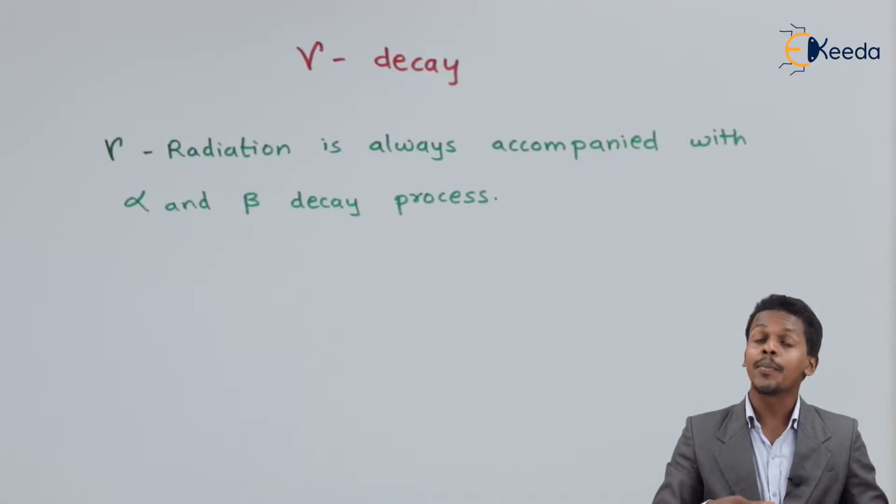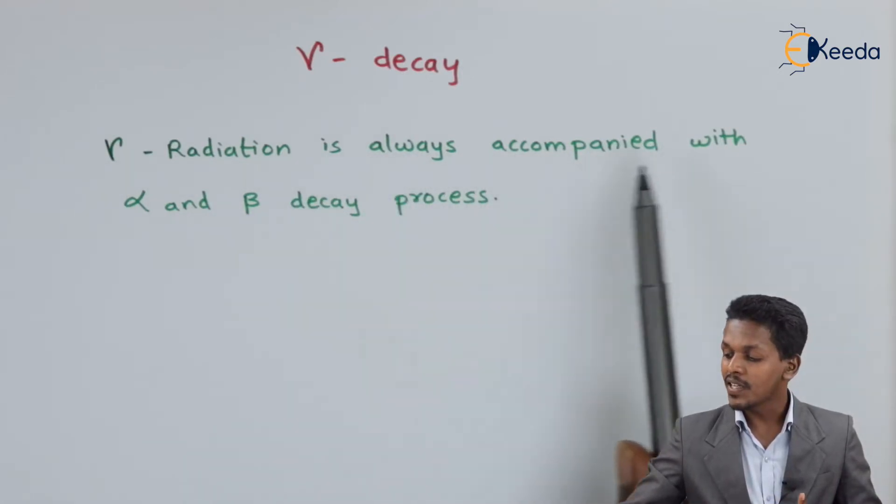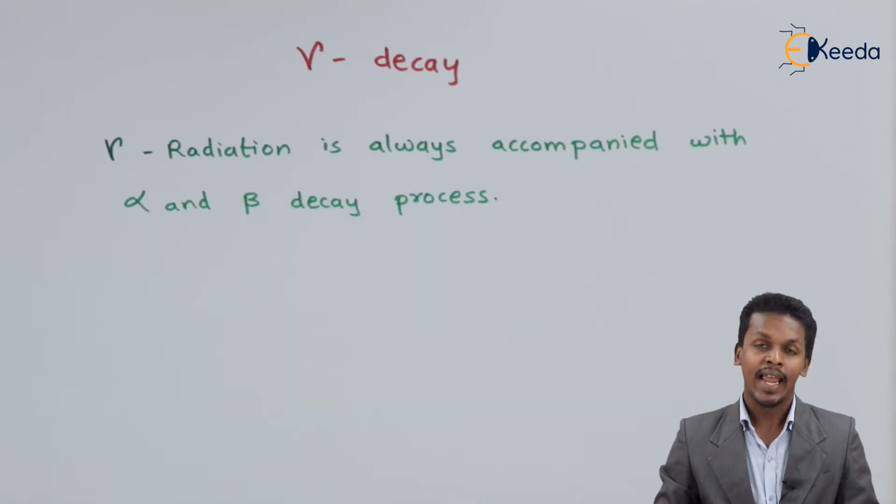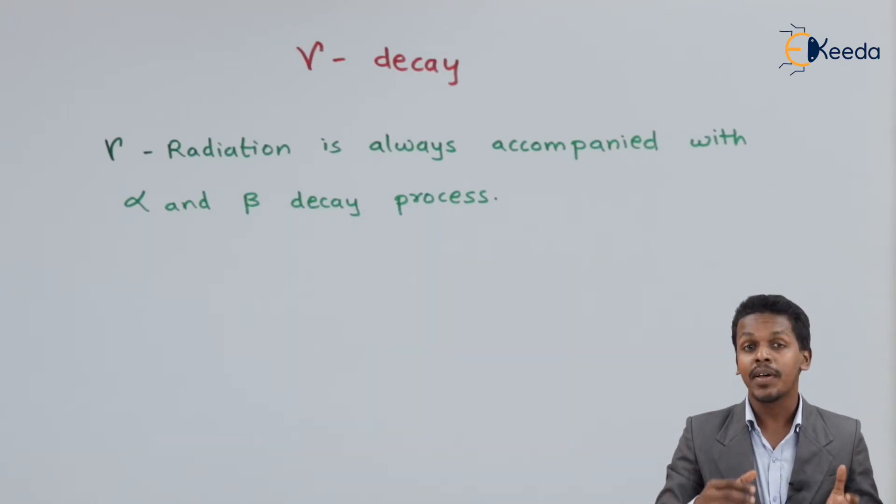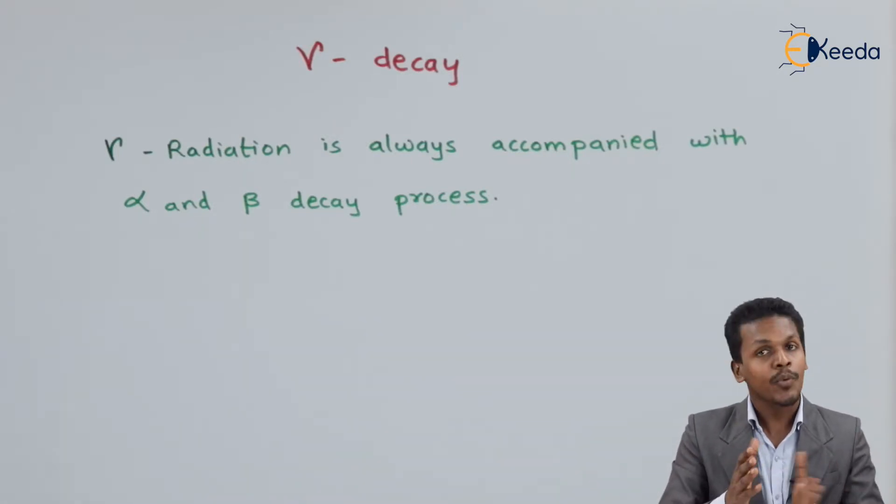Here I am going to talk about gamma decay. Let us understand that gamma radiation is always accompanied with alpha and beta decay processes. Gamma radiations are very harmful and they produce more energy.